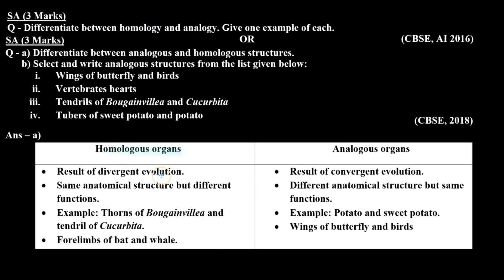The answer is part A: homologous organs result of divergent evolution and analogous organs result of convergent evolution. Homologous organs same anatomical structure but different functions, and analogous organs different anatomical structure but same functions.